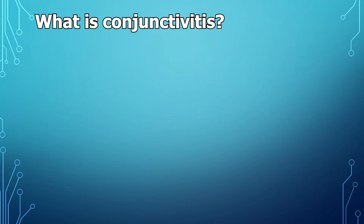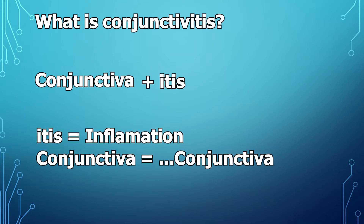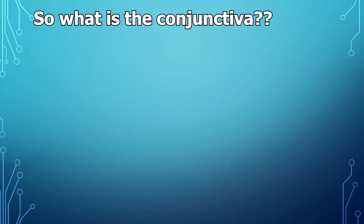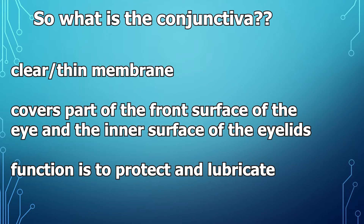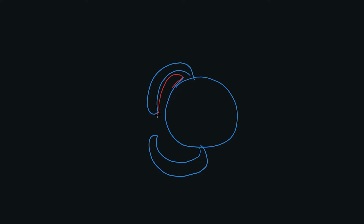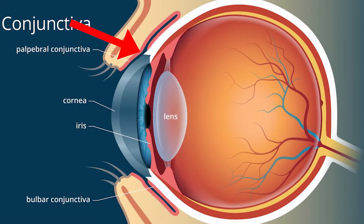So firstly, what is conjunctivitis? If you break up the word, you get conjunctiva and -itis, with -itis referring to inflammation and conjunctiva referring to the actual conjunctiva. The conjunctiva is a clear, thin membrane that covers the front surface of your eye and the inner surface of your eyelids. Its main function is to provide protection and lubrication of the eye. Here you can see the conjunctiva as it wraps around to the back of the eyelid.